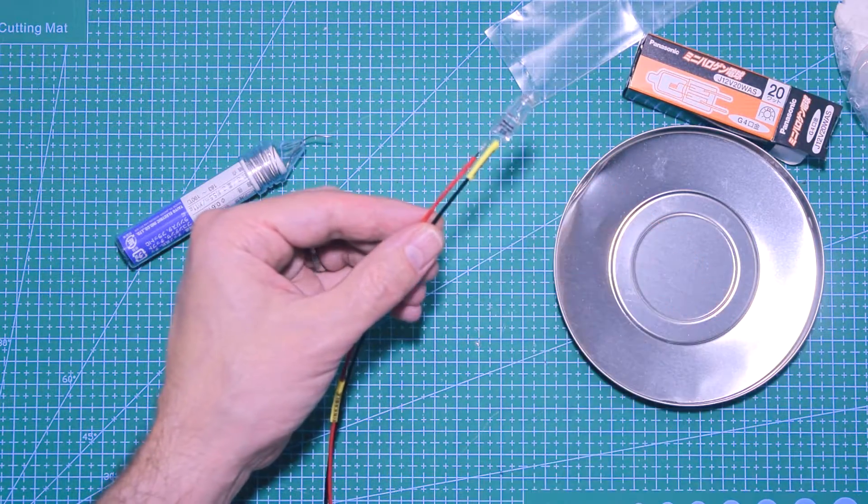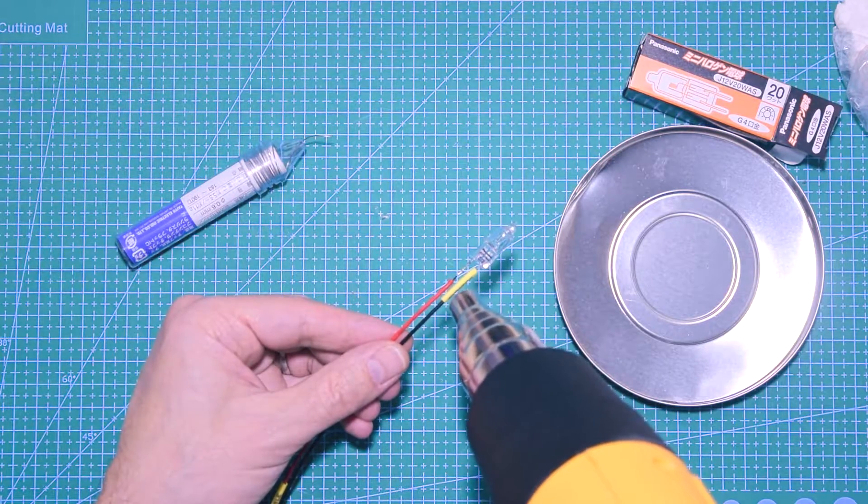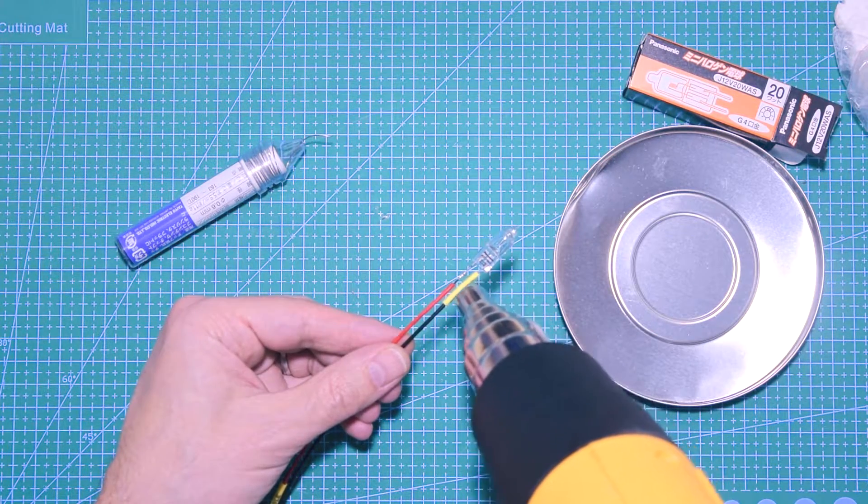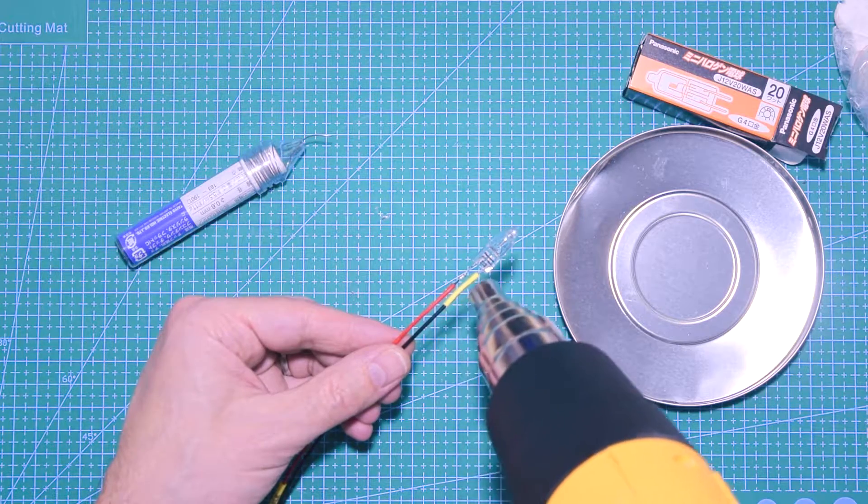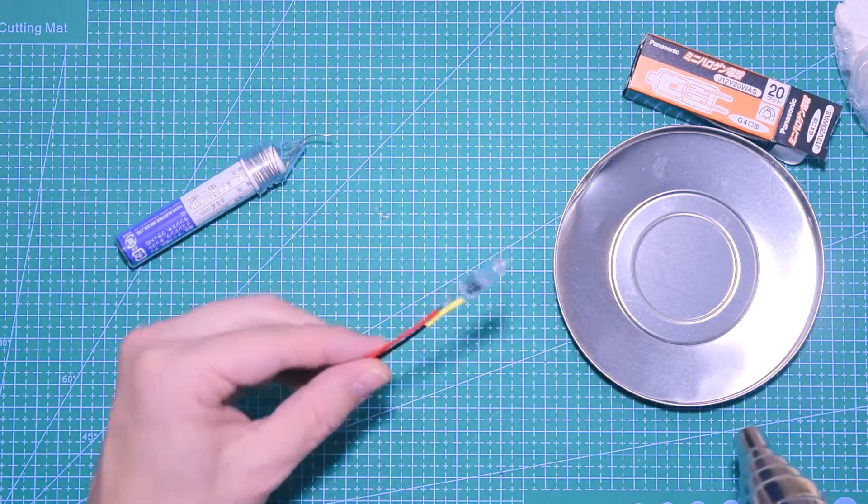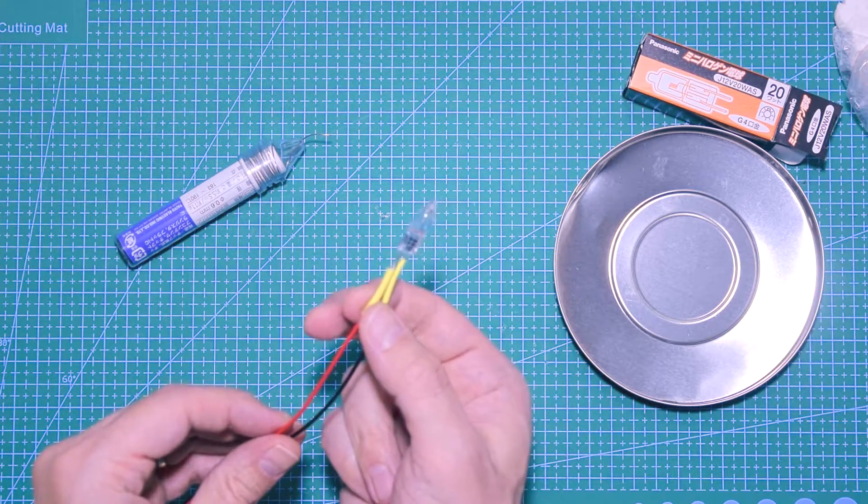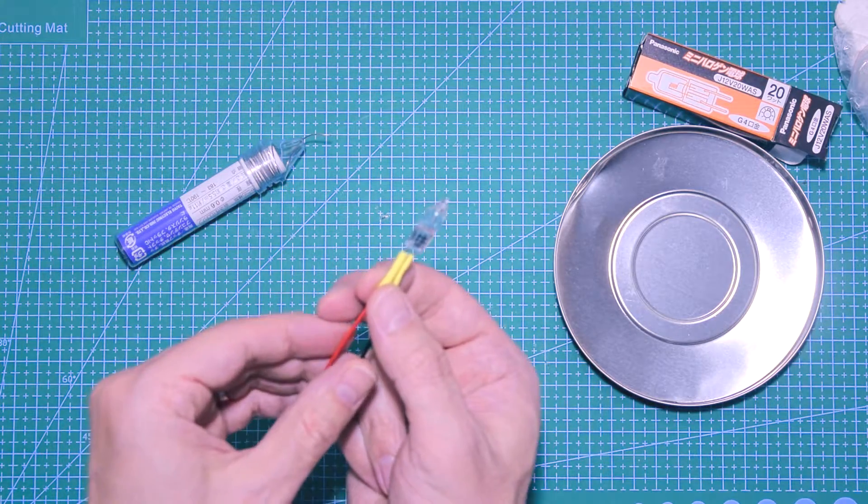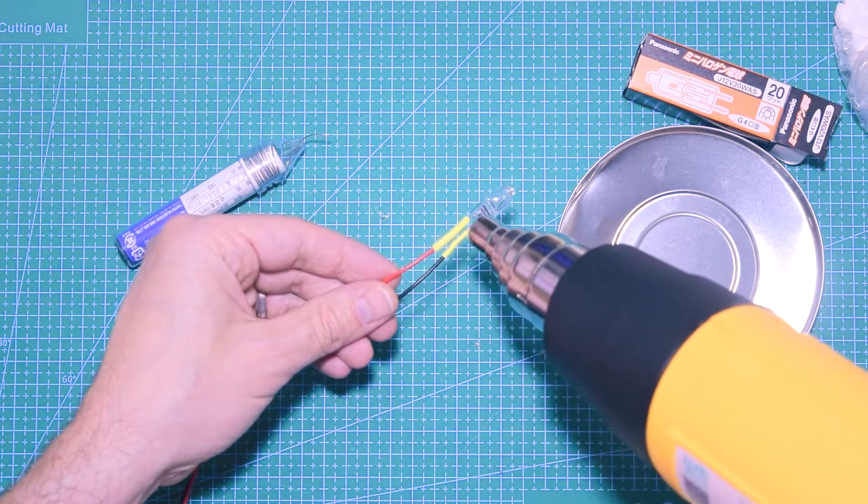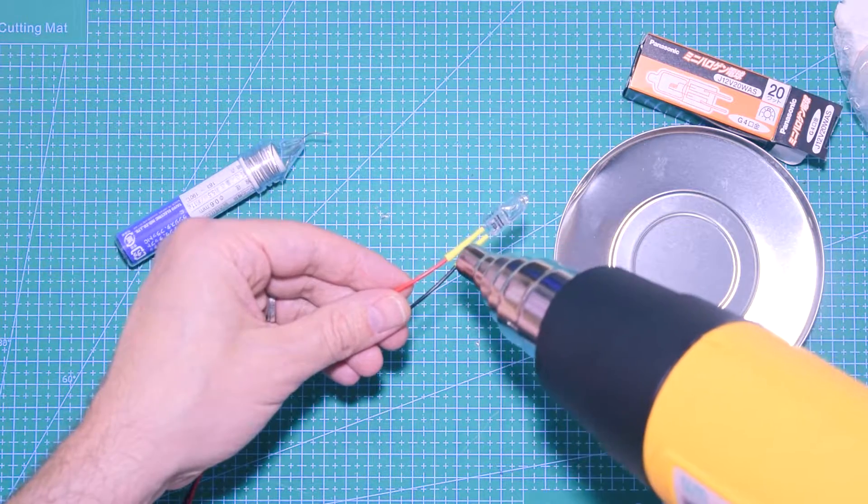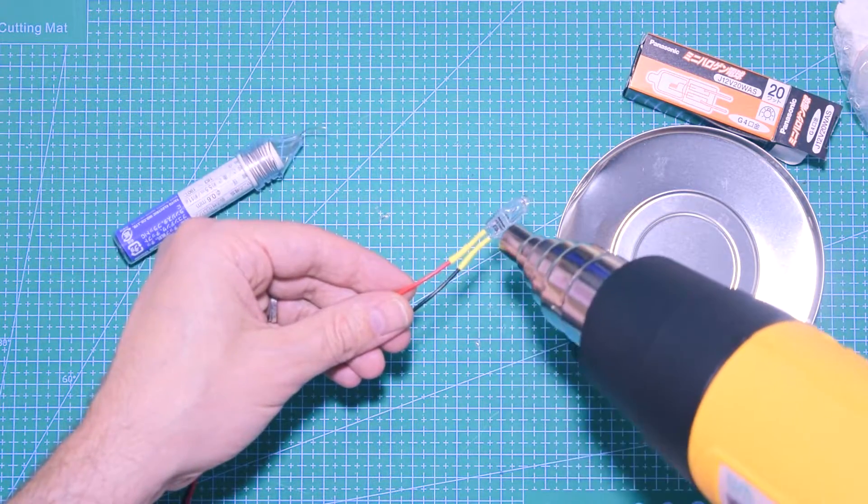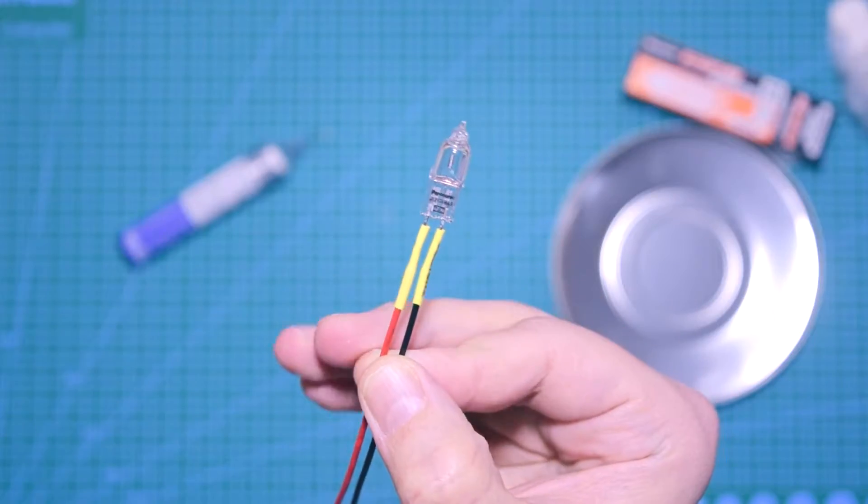Now I'm gonna put the heat shrink. You need to be careful not to put the heat shrink around the lamp itself because it's gonna become really hot and melt the plastic. Just keep the heat shrink to cover the cable and do not touch the lamp.